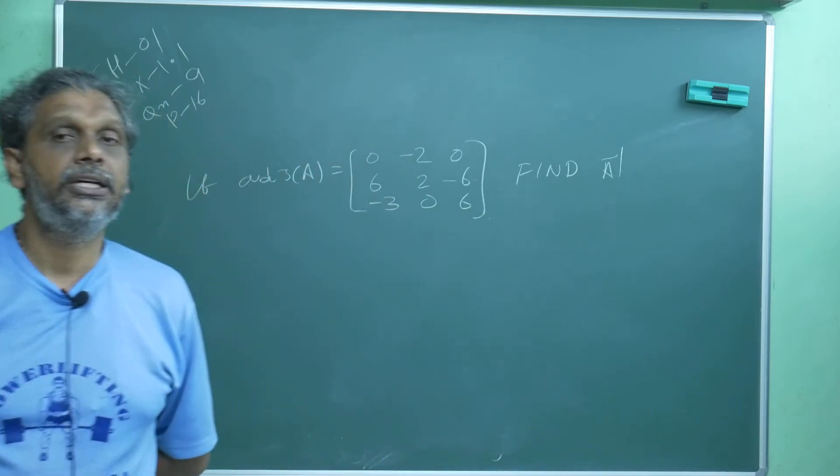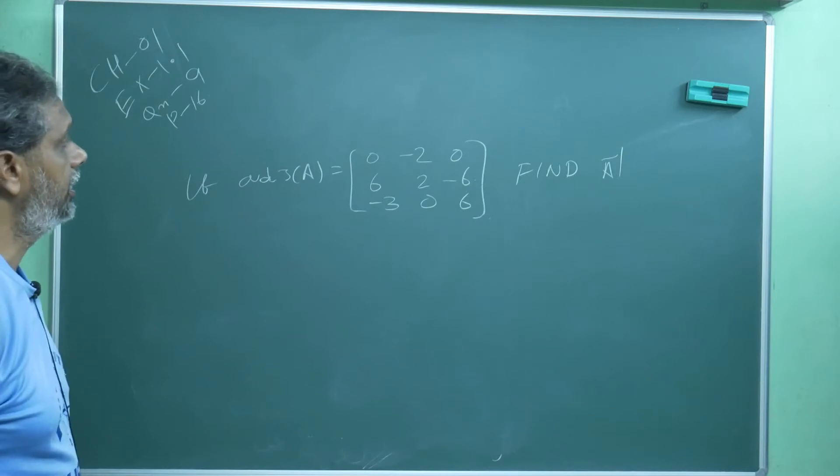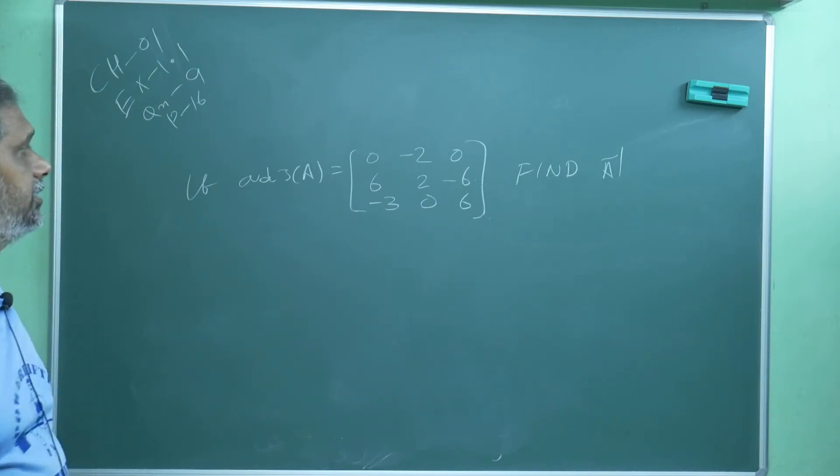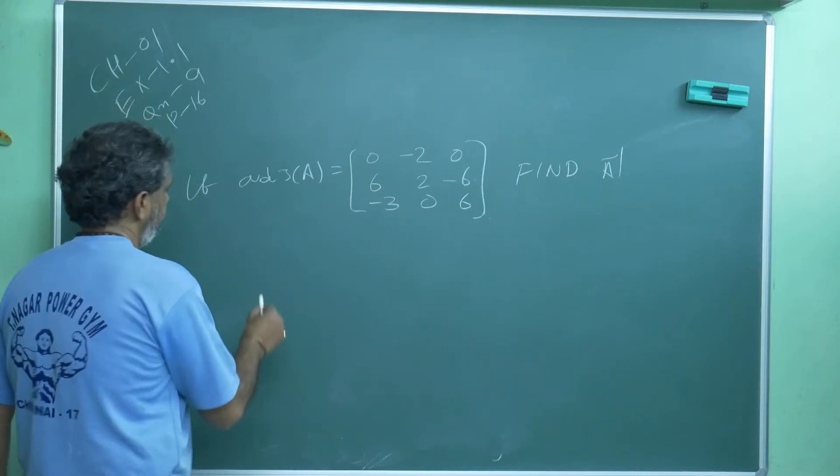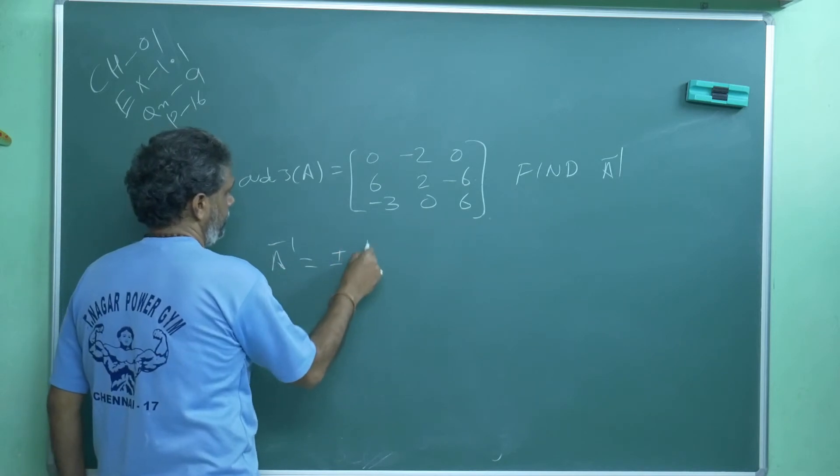The previous problem we did adjoint of adjoint of A, square root of determinant of adjoint of A, A inverse. This is somewhat easy compared to that question. So A inverse formula we will write: plus or minus 1 by root of determinant of adjoint of A into adjoint of A.